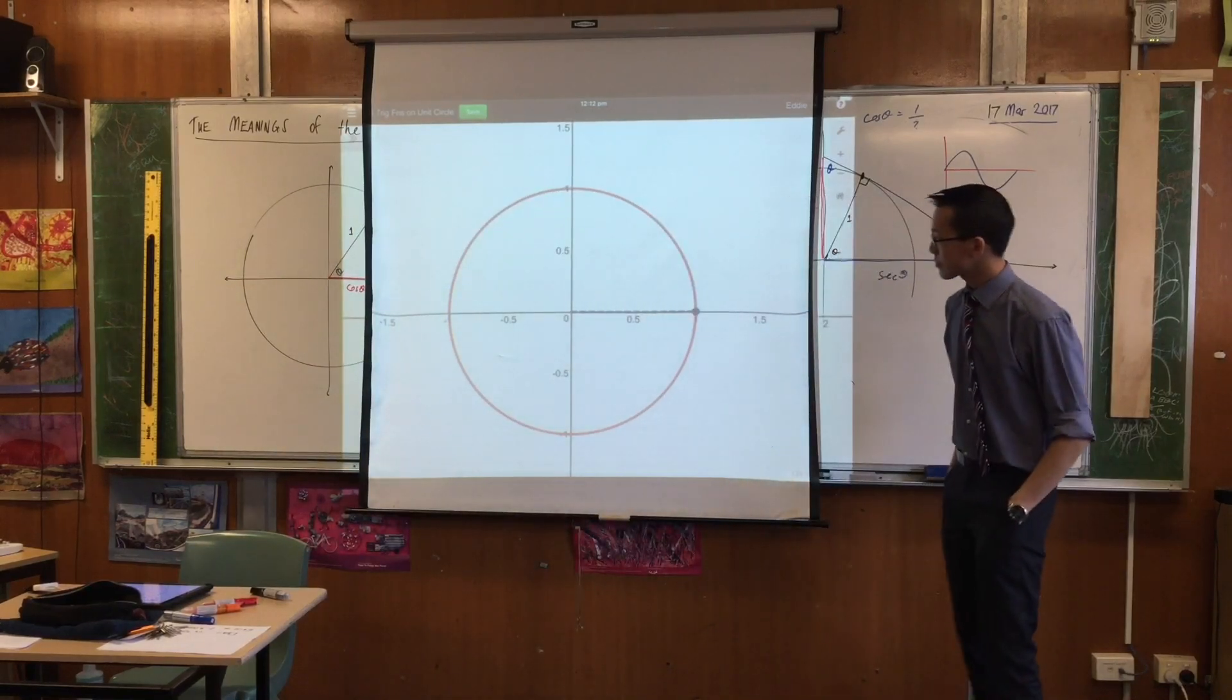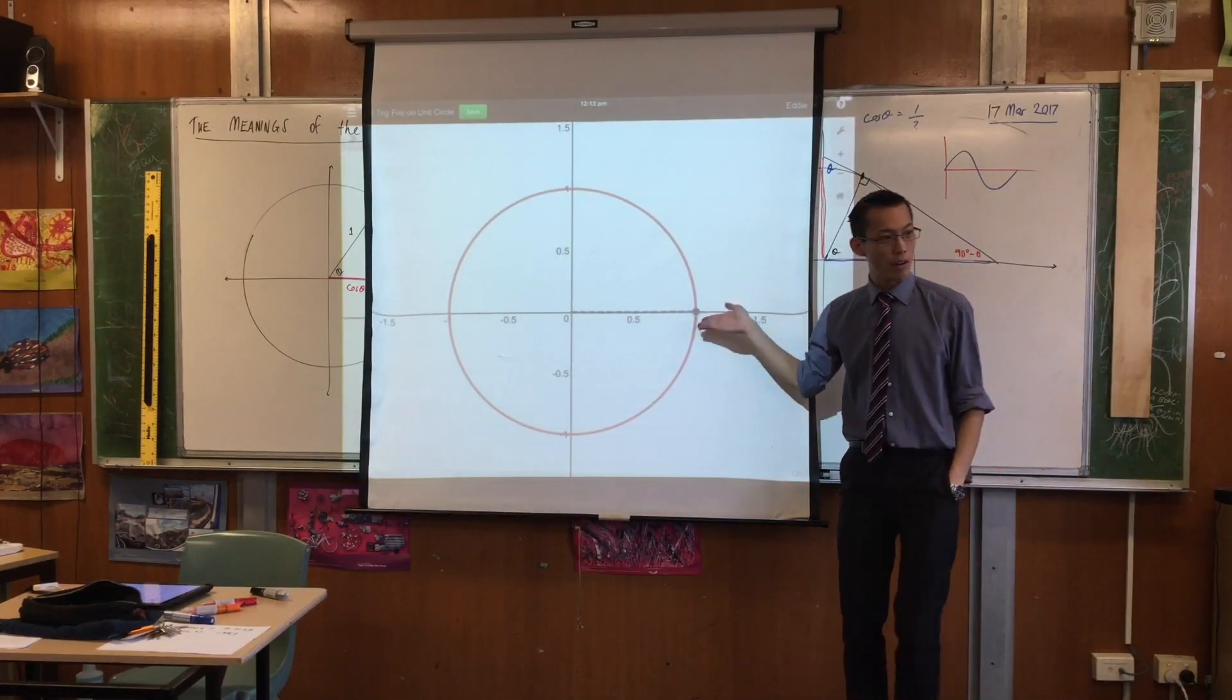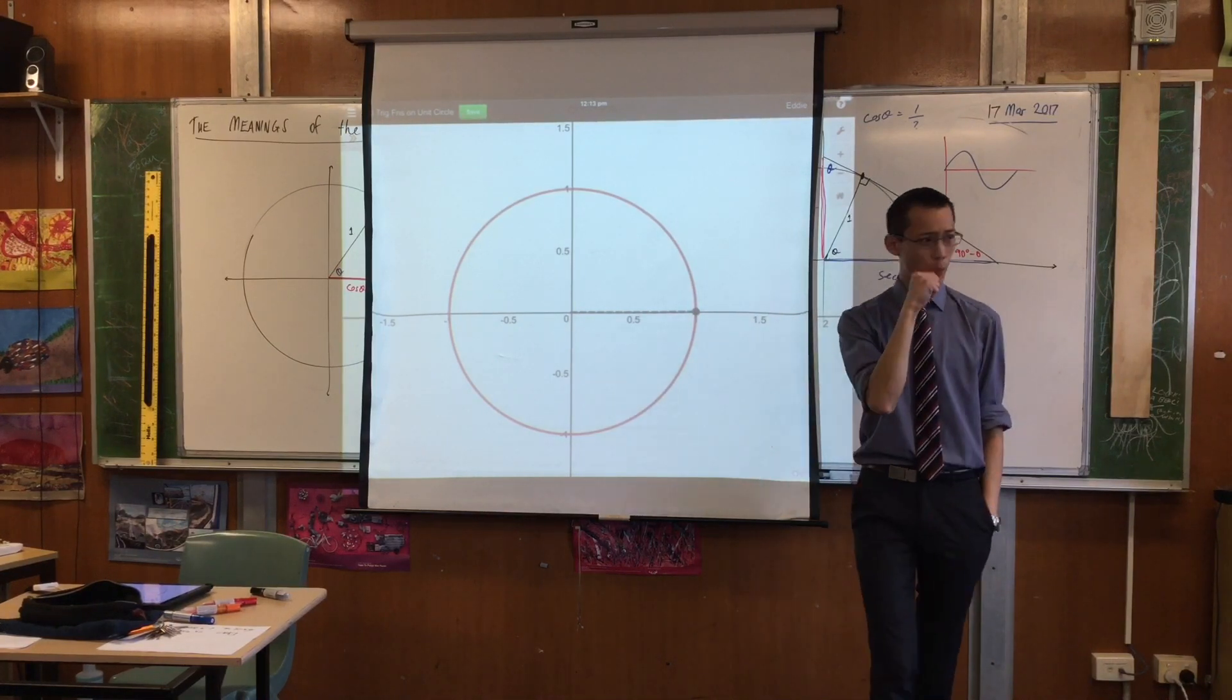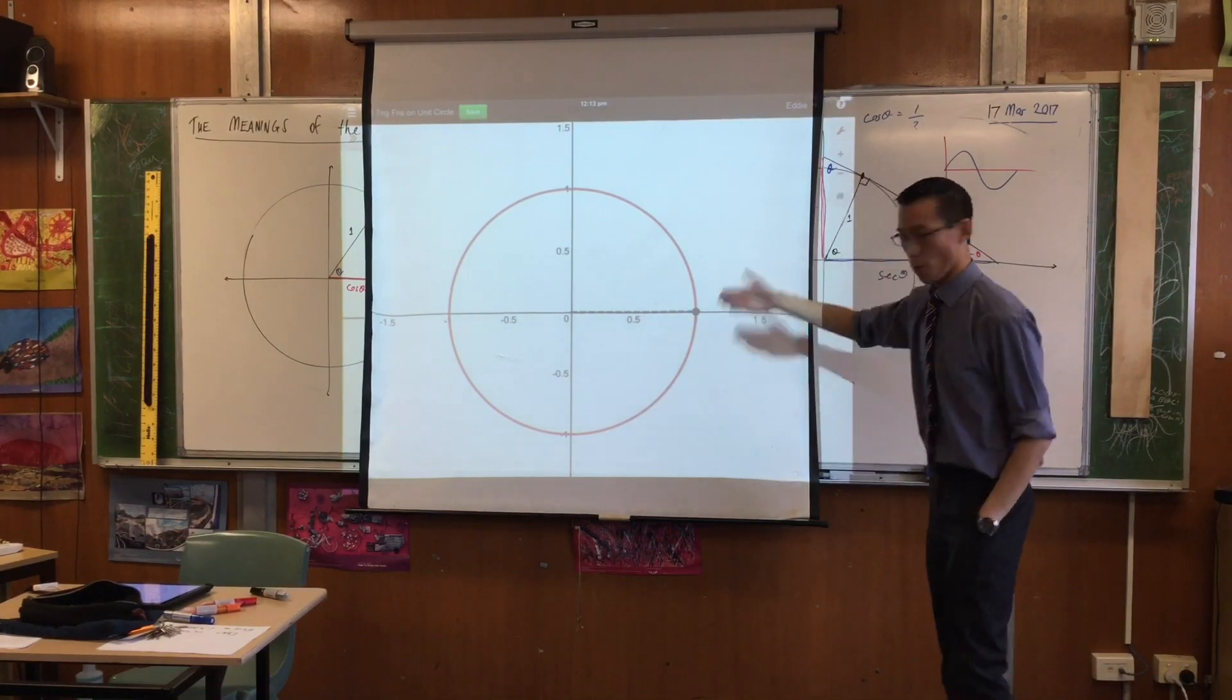So here's my unit circle, and you can see I've got a point on the circumference of the unit circle. By the way, that particular point, what theta would give me that point?